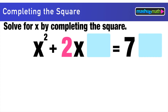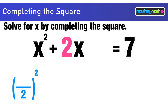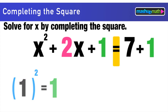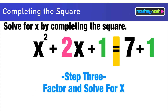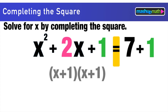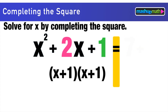Leaving room to work, we move to step two: take (b/2)² and add it to both sides. The b term is 2, so 2÷2 = 1, and 1² = 1. We add 1 to both sides. For step three, the trinomial x² + 2x + 1 factors to (x+1)(x+1), and 7 + 1 = 8 on the right.